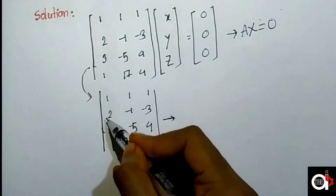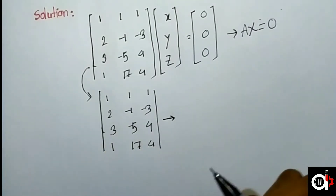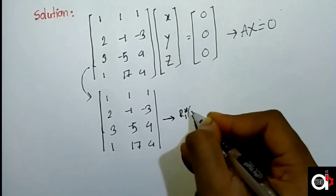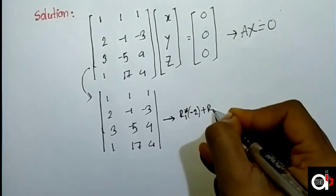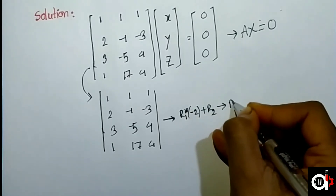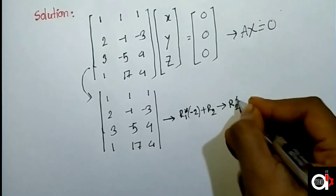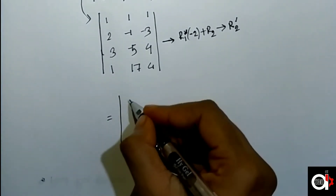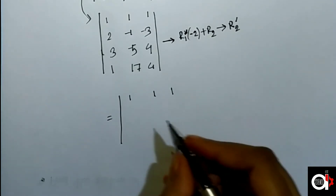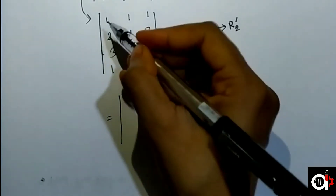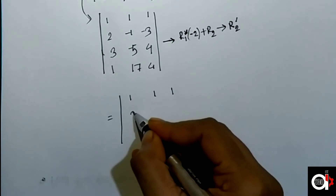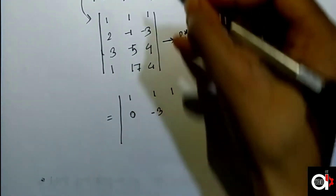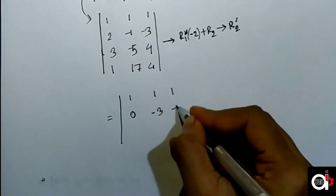We apply the operation R2 = minus 2 times R1 plus R2. The first row is unchanged. The second row becomes: minus 2 times 1 is minus 2, plus 2 gives 0; then minus 2, minus 1, minus 3; and minus 2, minus 3, minus 5.